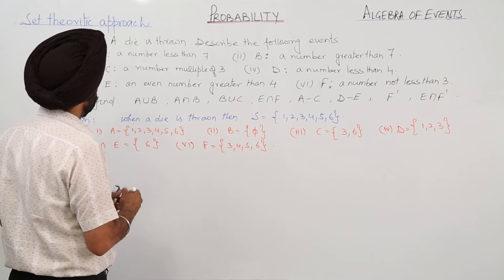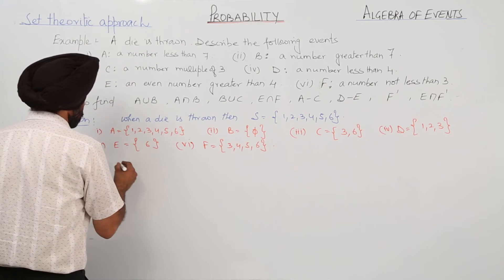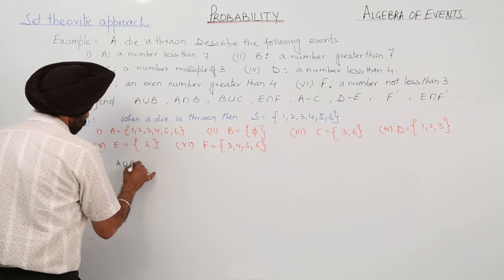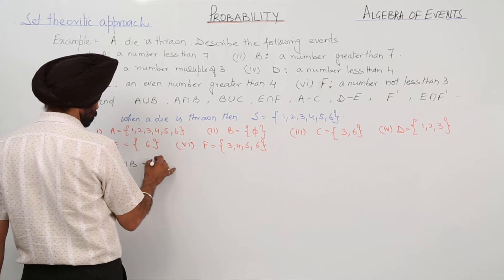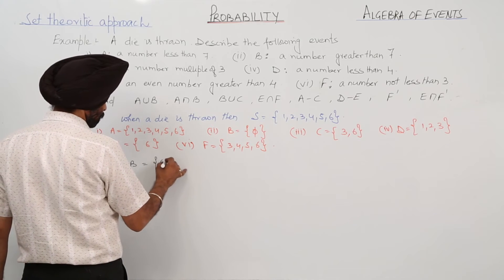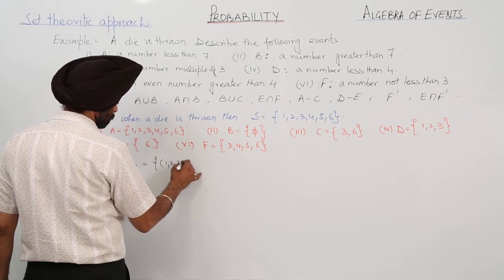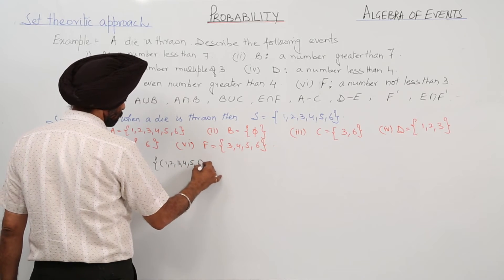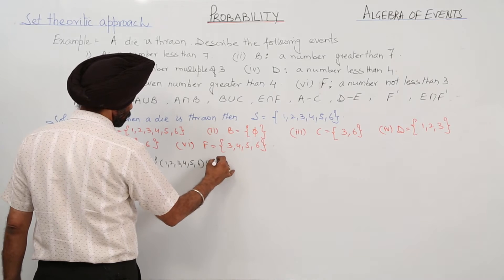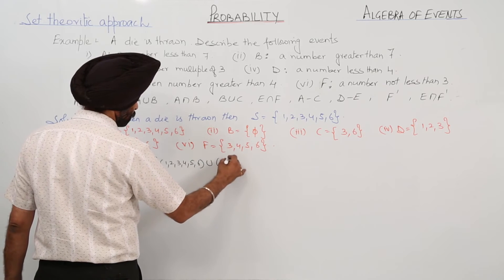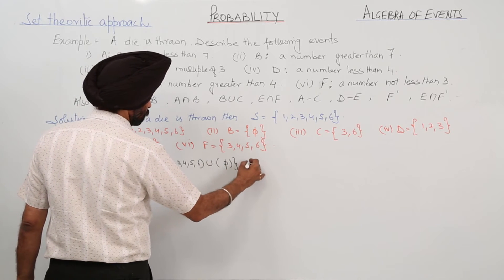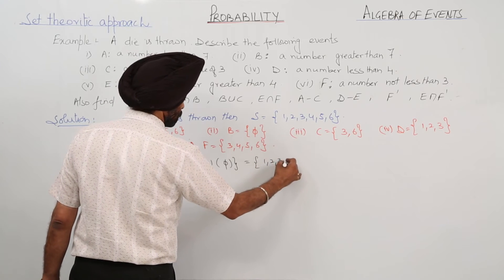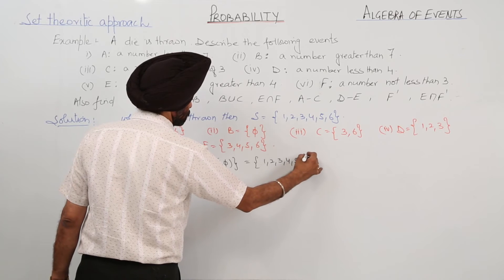Now we have to represent the set operations. Number 1 is A union B. A union B: A is {1, 2, 3, 4, 5, 6} union with B which is empty, so the result is {1, 2, 3, 4, 5, 6}.